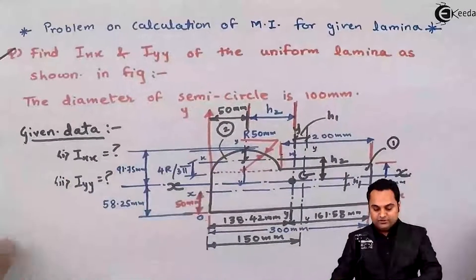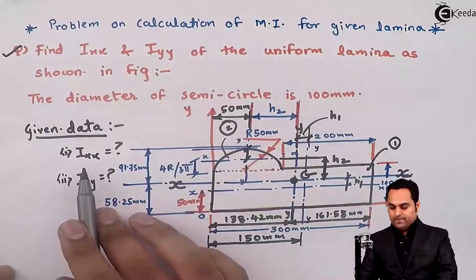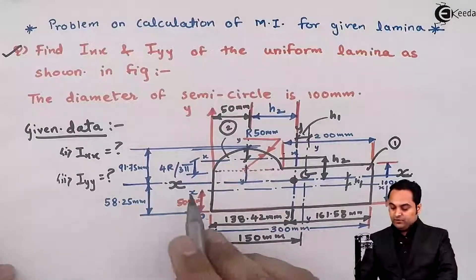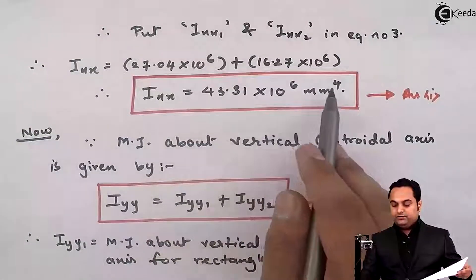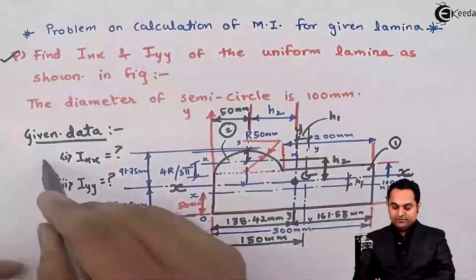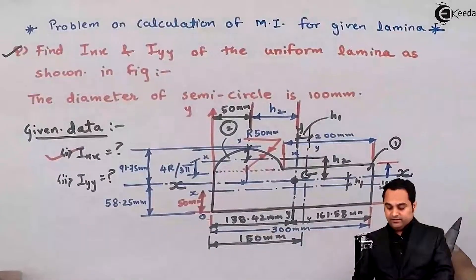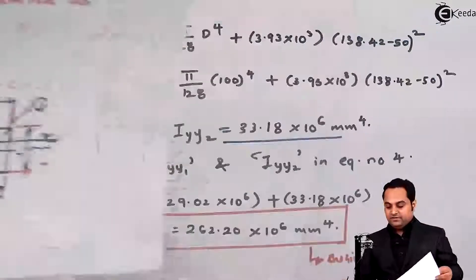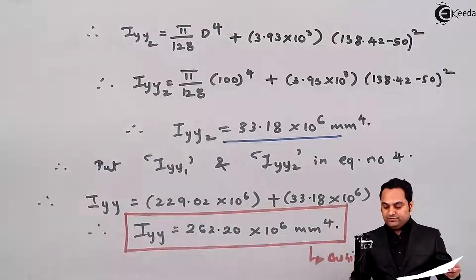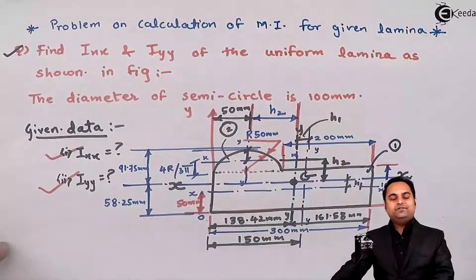To summarize, there were two quantities asked: Ixx and Iyy. Ixx, the MI of the complete section about its x-axis, is 43.31 × 10⁶ mm⁴. Iyy, the MI about the y-axis, is 262.20 × 10⁶ mm⁴. The problem has been completed. Thank you so much for your time.